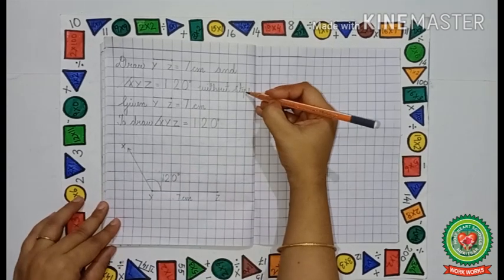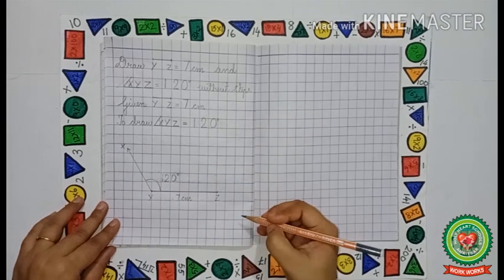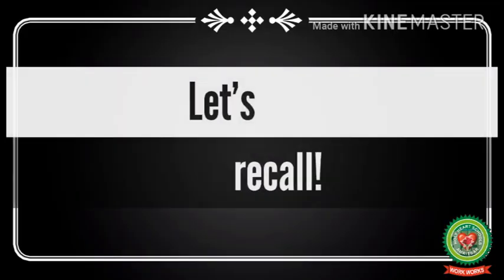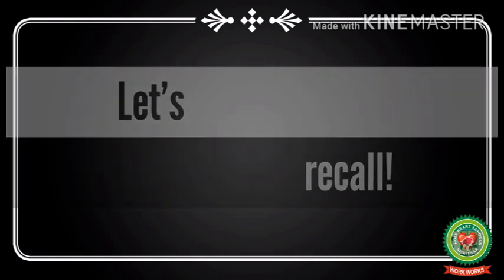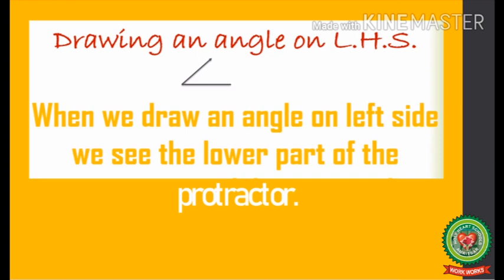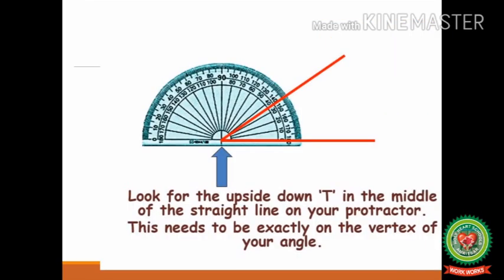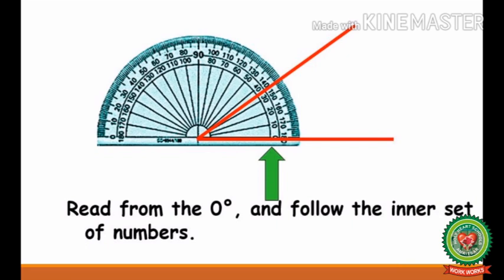Since in the question it is written without steps, we will not write the steps. Now kids, let us recall what we have learnt today. When we draw an angle on the left side, we see the lower part or the inner set of the protractor. Look for the upside down T in the middle of the straight line on your protractor — this needs to be exactly on the vertex of your angle. To draw an angle on the left hand side, read from zero degree and follow the inner set or lower part of numbers on the protractor.